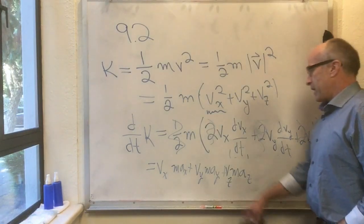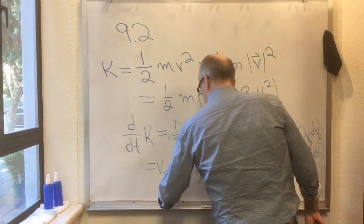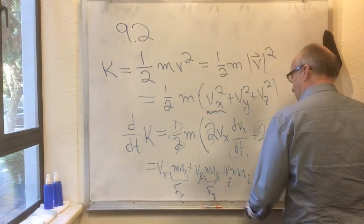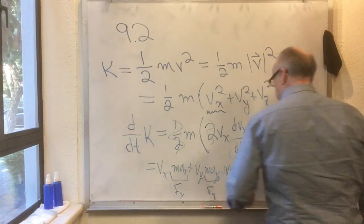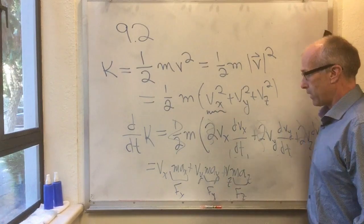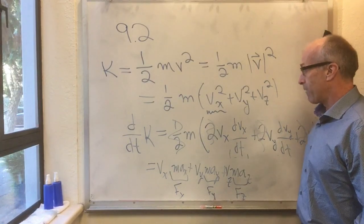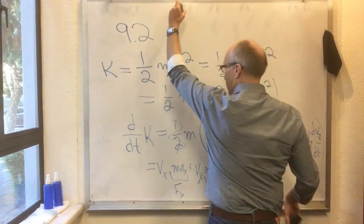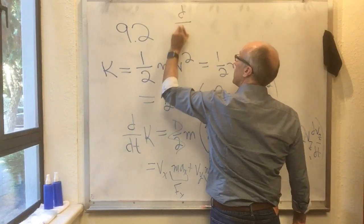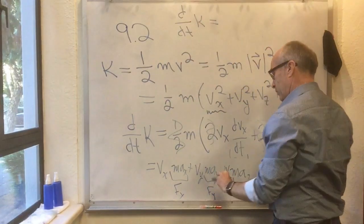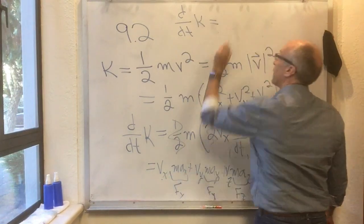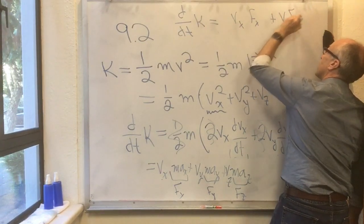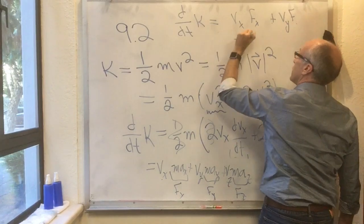Well, why did I put the m's there? Because max—that's fx by Newton's second law, and may—that's fy, and maz—that's fz. So I've just learned that I have a nice clean way of writing the time derivative of k: dk/dt equals Vx fx plus Vy fy plus Vz fz.